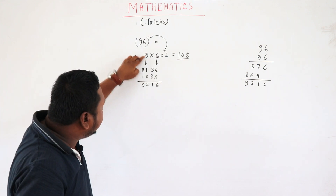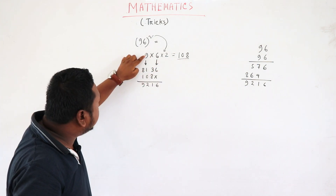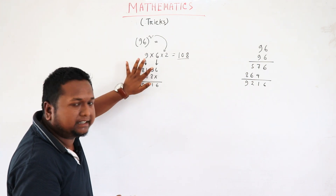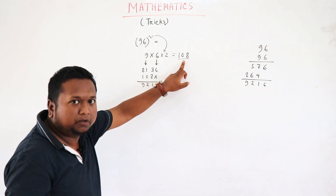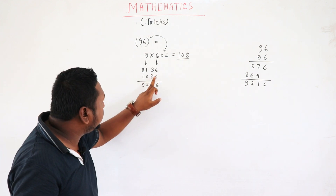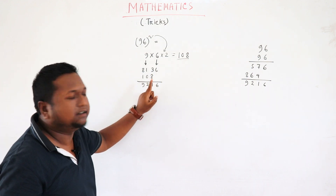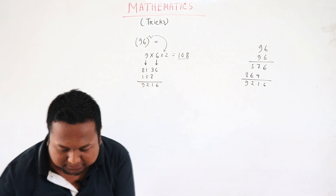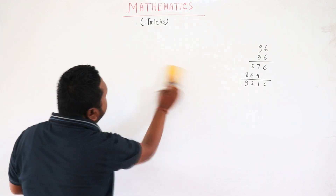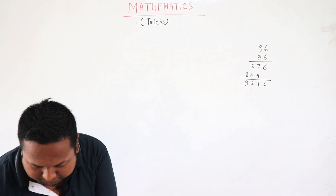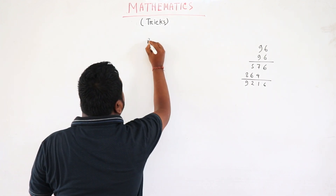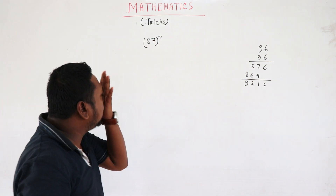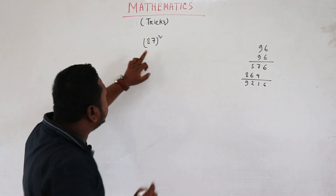Miner square is 81, 600 square is 36. This is the second square of the square. Let's take this. 87 square is 8.